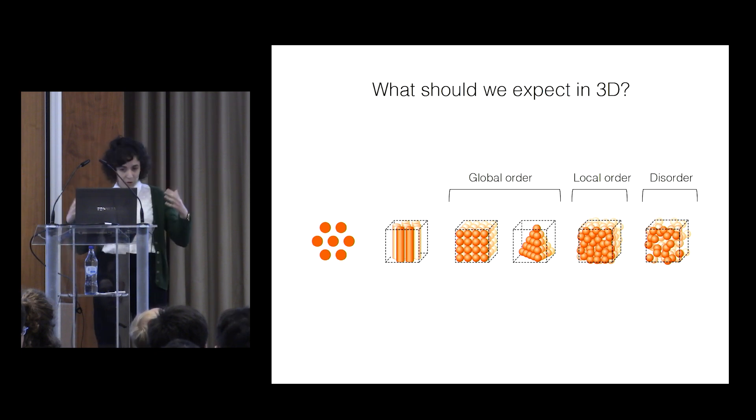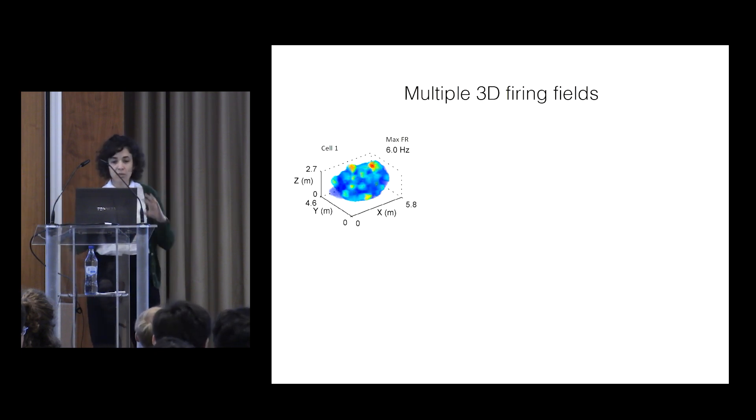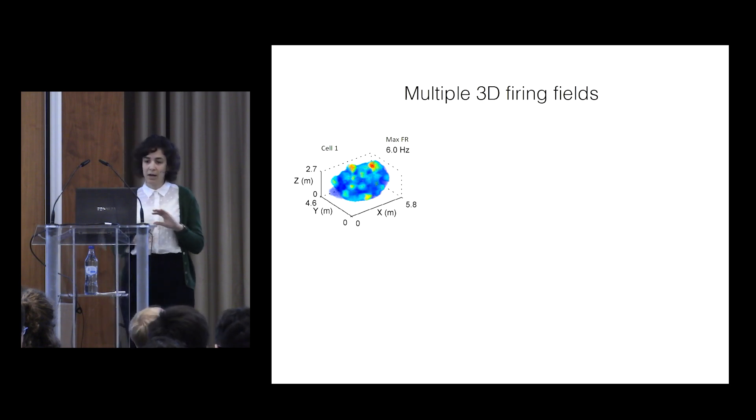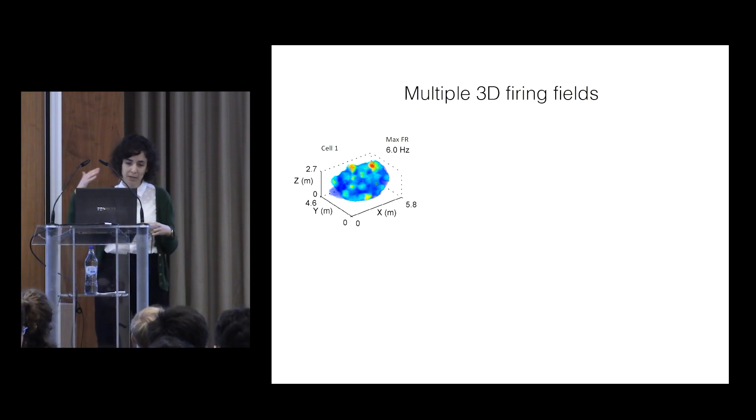So with these options in mind, this is what the data actually looks like. Here we see a cell firing in the 5x6 meter room. It's a firing rate map in the form of a heat map. So red high-firing areas, blue low-firing areas.